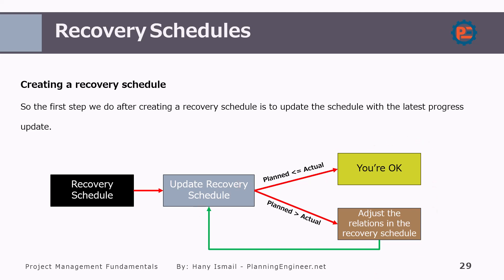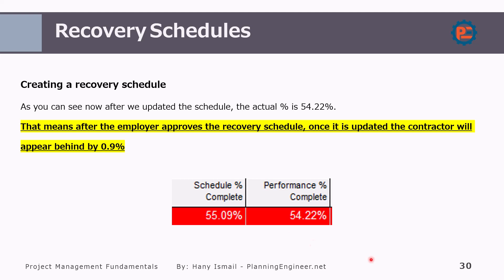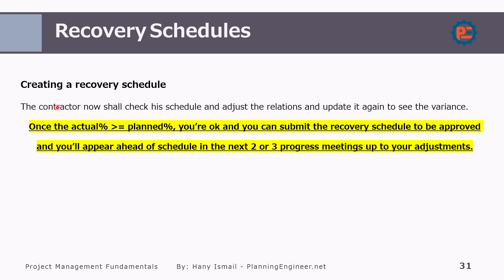Let's see an example. It doesn't have to be exactly the same — there should be some minimum acceptable variance. In this scenario, the scheduled percentage complete or plan is 55.09%, and the actual performance percentage complete is 54.22%. This means once you update the schedule, you will be behind by 0.9%. I don't recommend this scenario — the variance should ideally be around 0.1% or 0.05%. So the contractor should check the schedule, adjust the relationships, and update again. Once the actual percentage is more than or equal to the plan percentage, you are okay and can submit the recovery schedule.